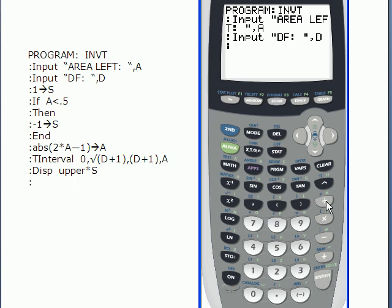If you make an error, if you press clear, it will wipe out the entire line, and you'll start that line fresh. Otherwise, arrow back over to whatever character you've made a mistake with, and you can hit delete. I'm on the third line now, which is one arrow S. So one, and now the arrow is actually the store key. And then S, alpha S is what I want to type in. Enter.